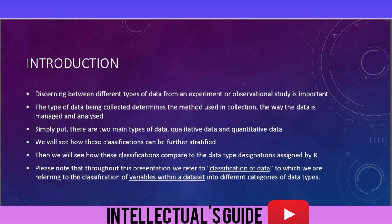Simply put, there are two main types of data: qualitative data and quantitative data. We will see how these classifications can be further stratified, then we will see how these classifications compare to the data type designations assigned by R. Please note that throughout this presentation we refer to classification of data, which we are referring to the classification of variables within a data set into different categories of data types.